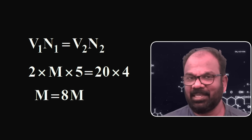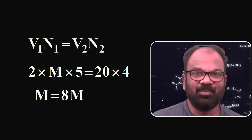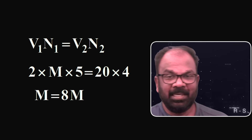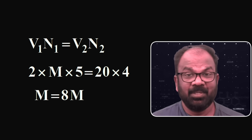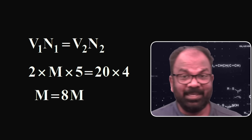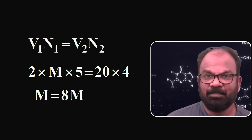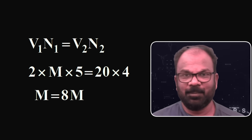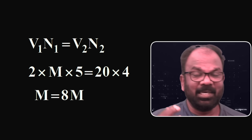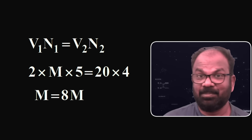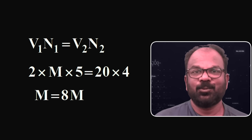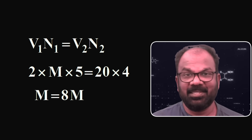We know for a titration reaction, the equation is V1N1 = V2N2. Here, V1 is 2 ml, N1 is M × 5, V2 is 20 ml, and N2 is 4. Substituting these values, the molarity of KMnO₄ solution M can be calculated. It is equal to 8 molar, so here the answer is 8.